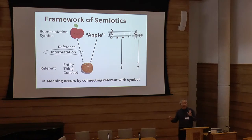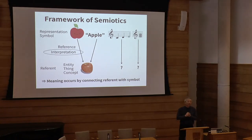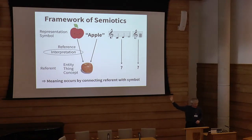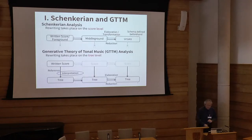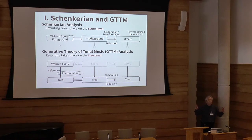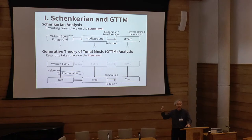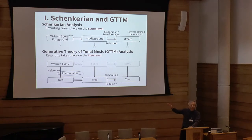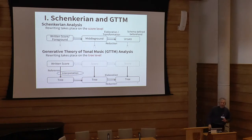Association occurs at the moment we get a meaning of the icon or surface-level representation. This leads us to two major schools of music theory: one is Schenkerian analysis, and the other is GTTM — the Generative Theory of Tonal Music. Many of you probably know these well.